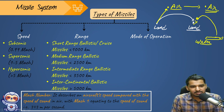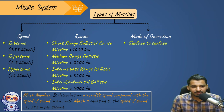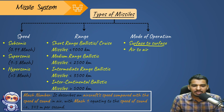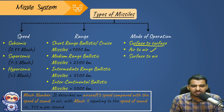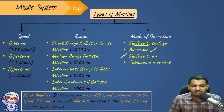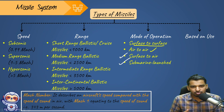Based on mode of operation, missiles can be: surface to surface (land to land), air to air (from one aircraft to another), surface to air (firing from surface towards enemy aircraft), or submarine launched (launching from a submarine). These are the major modes of operation.